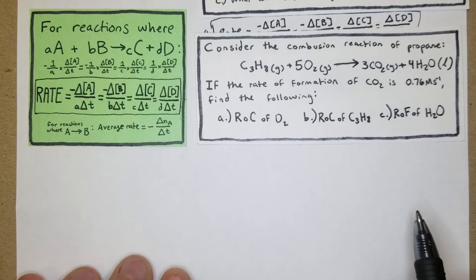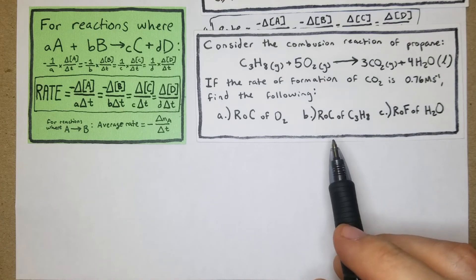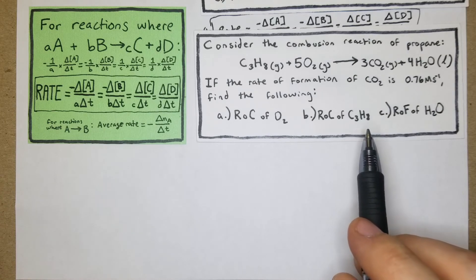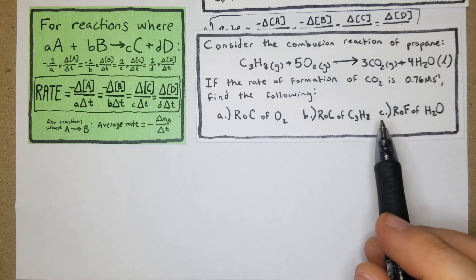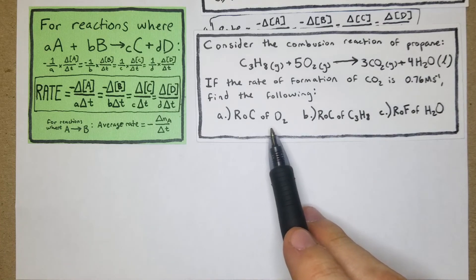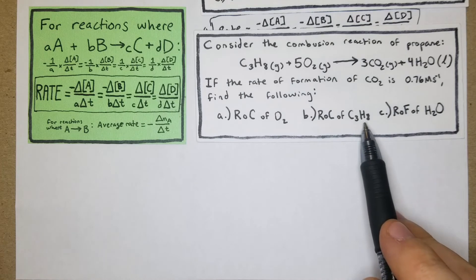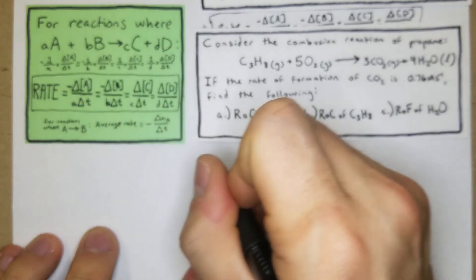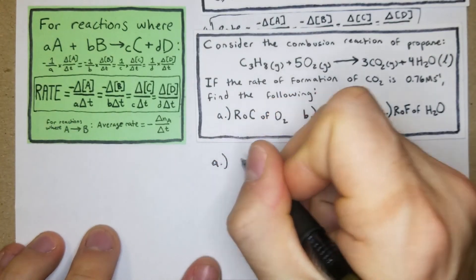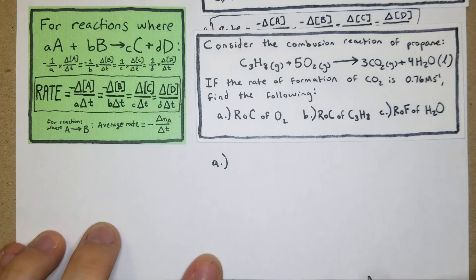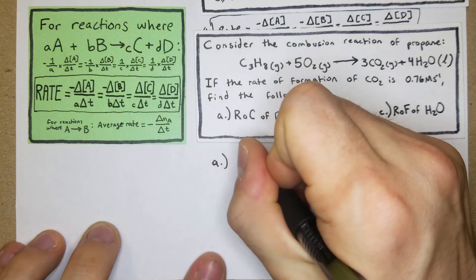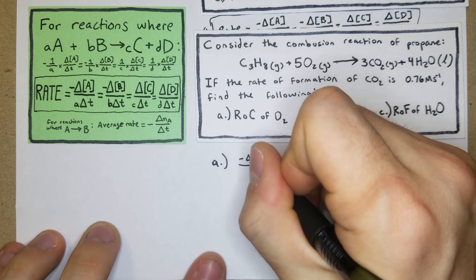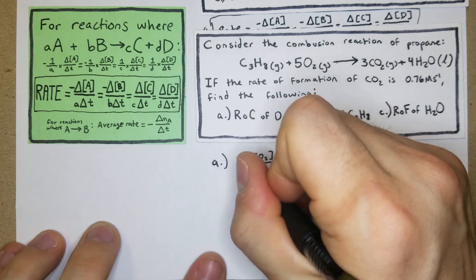Our final problem: consider the combustion of propane — C₃H₈ + 5O₂ → 3CO₂ + 4H₂O. If the rate of formation of CO₂ is 0.76 M·s⁻¹, find: (a) the rate of consumption of O₂, (b) the rate of consumption of C₃H₈, and (c) the rate of formation of H₂O. For part a, we plug into the formula.